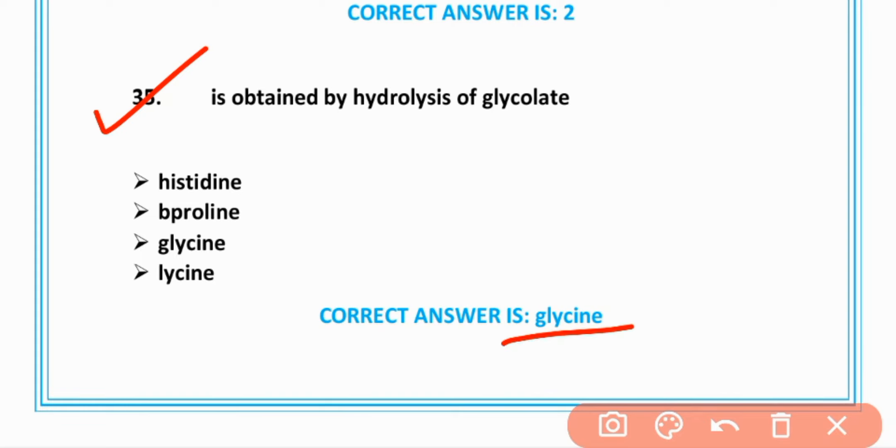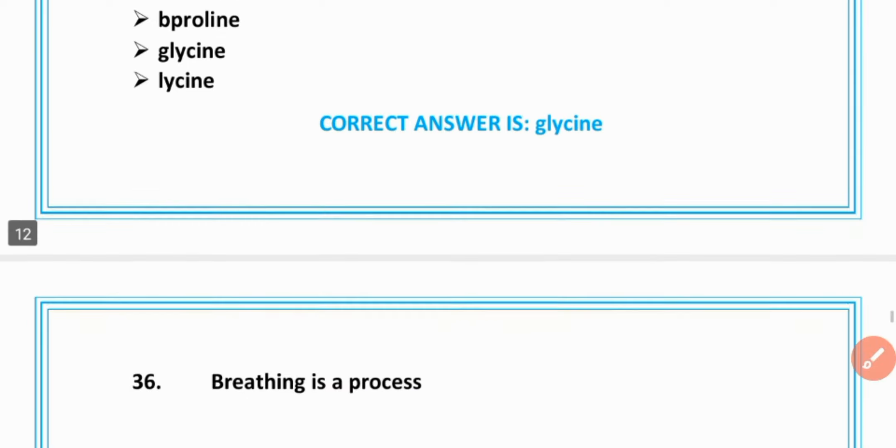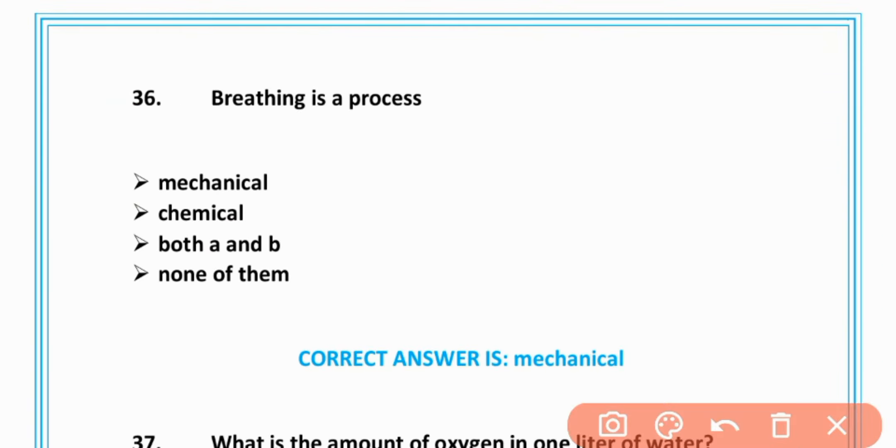MCQ number 35: Glycine is obtained by hydrolysis of glycolate, option C is correct. MCQ number 36: Breathing is a mechanical process, option A is correct.